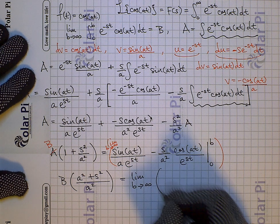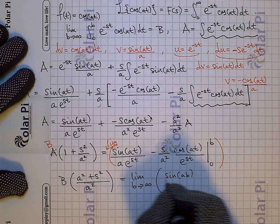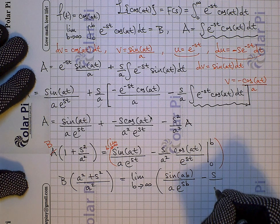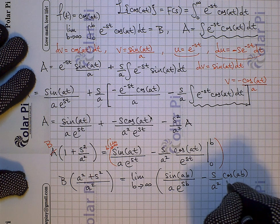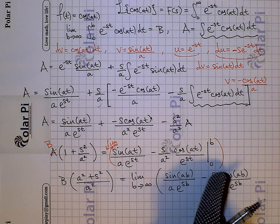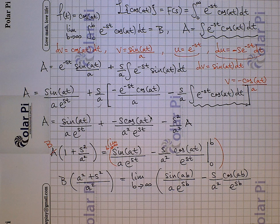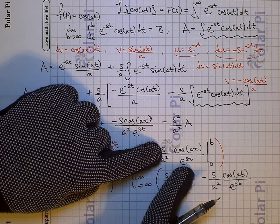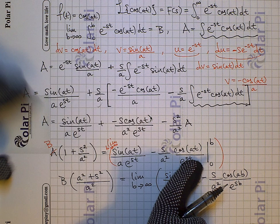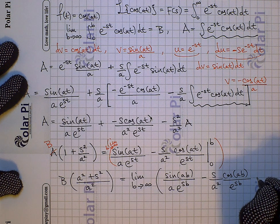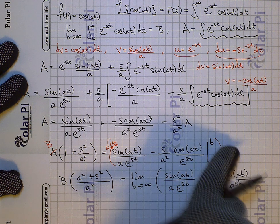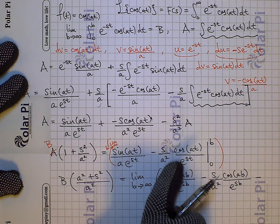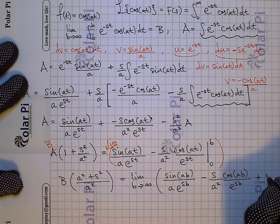When I evaluate at B, I get sine of aB divided by a times e to the sB, and then minus s over a squared times cosine of aB divided by e to the sB. When I plug in zero, the sine of zero term goes to zero. Here I get minus s over a squared times cosine of zero, which is one, divided by e to the zero, which is one — so just minus s over a squared. The evaluation theorem comes with a minus sign, so minus times that negative gives us plus s over a squared.